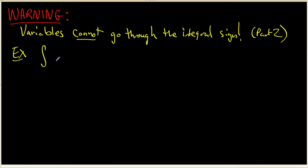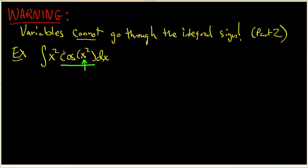Suppose we were looking for the antiderivative of x squared times the cosine of x squared dx. A student looks at this problem and correctly identifies cosine of x squared as a composition, where the inside function is x squared. We've got x squareds sitting inside the integral.